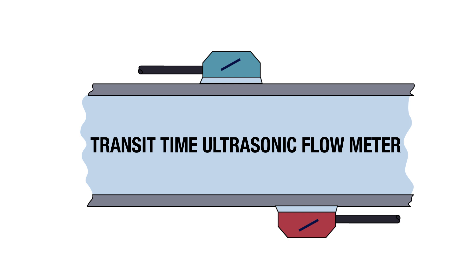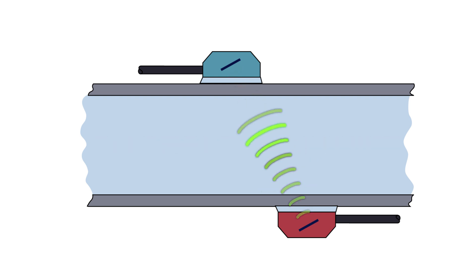A transit time ultrasonic flow meter measures the difference in time from when an ultrasonic signal is transmitted from the first transducer until it crosses the pipe, bounces back and is received by the second transducer. When flow is present, sound moves faster if traveling in the same direction as the flow, and slower if moving against it. A comparison is made of upstream and downstream measurements.